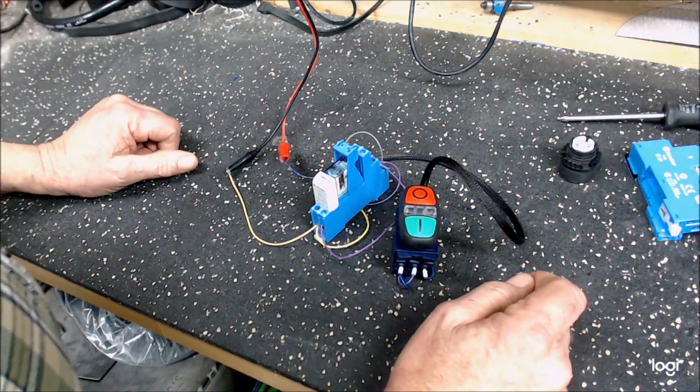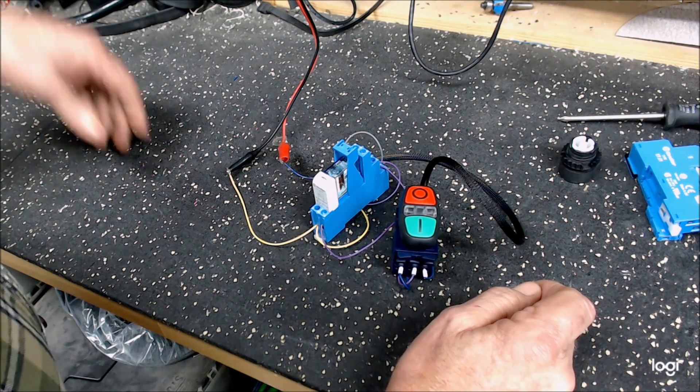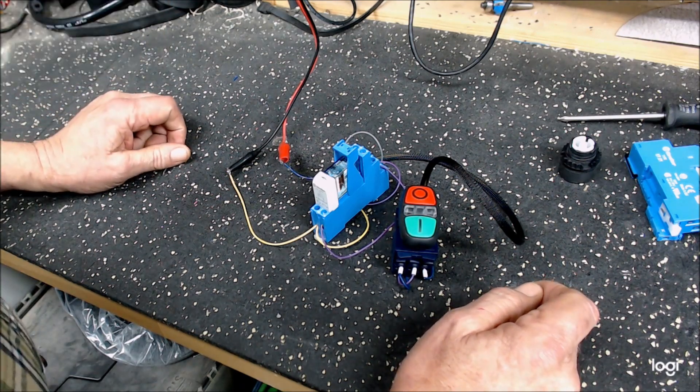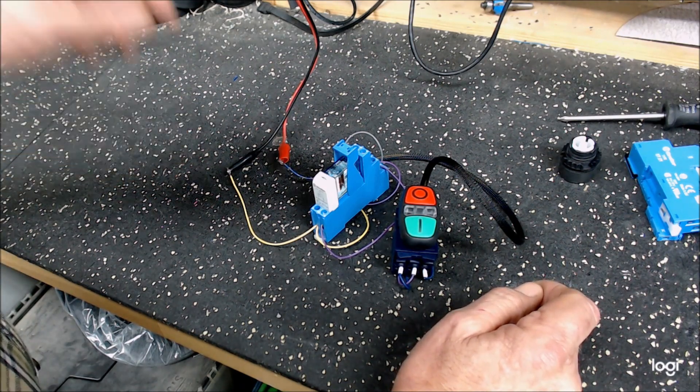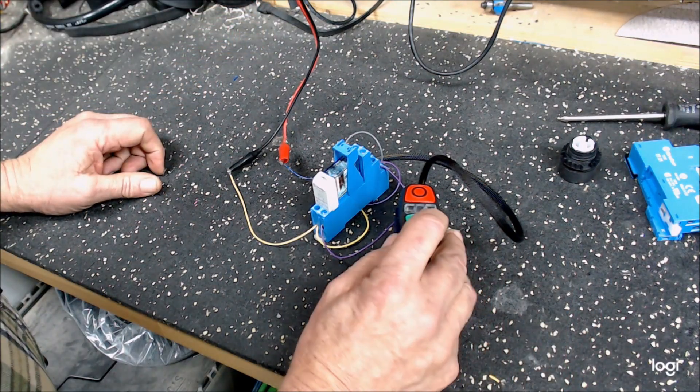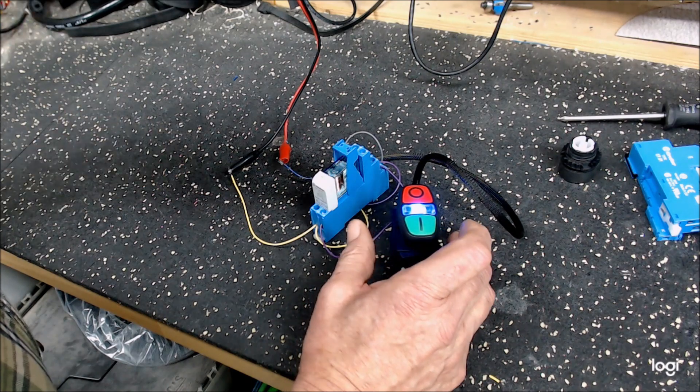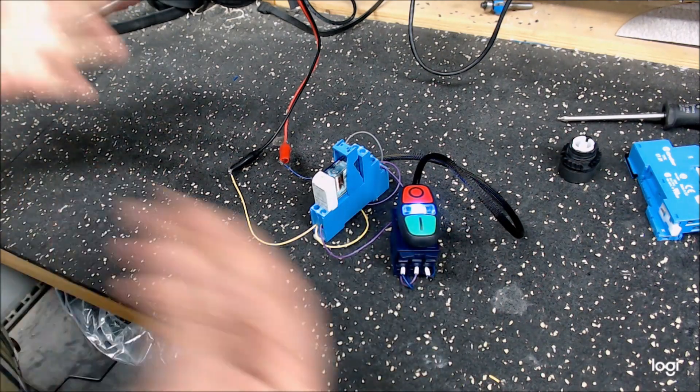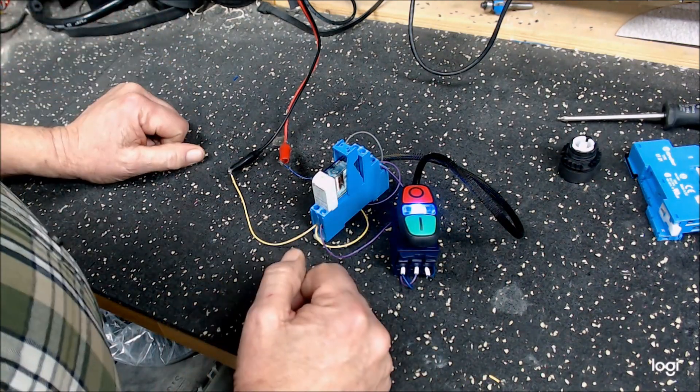The example often made is with a table saw - you're using a latching circuit to control the table saw motor because if it goes off, you want it to stay off. When the operator gets back, he pushes the button and activates it again. Hopefully this will help some of you understand a little bit more than maybe the schematic does.